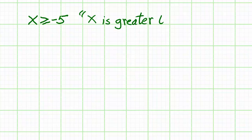What this says is that x, which can be any number in our number system, is greater than or equal to negative 5. The line underneath the arrow says or equal to.